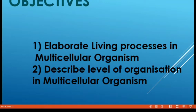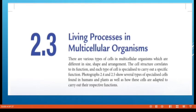Before this we learned about unicellular organisms — the amoeba and paramecium — how they conduct their life, how they reproduce, and so on. Now we are going to learn the living processes in multicellular organisms. We are humans; we are examples of multicellular organisms. We have many types of cells — different types, different sizes, different shapes, and different arrangements. The cell structure correlates with its function.